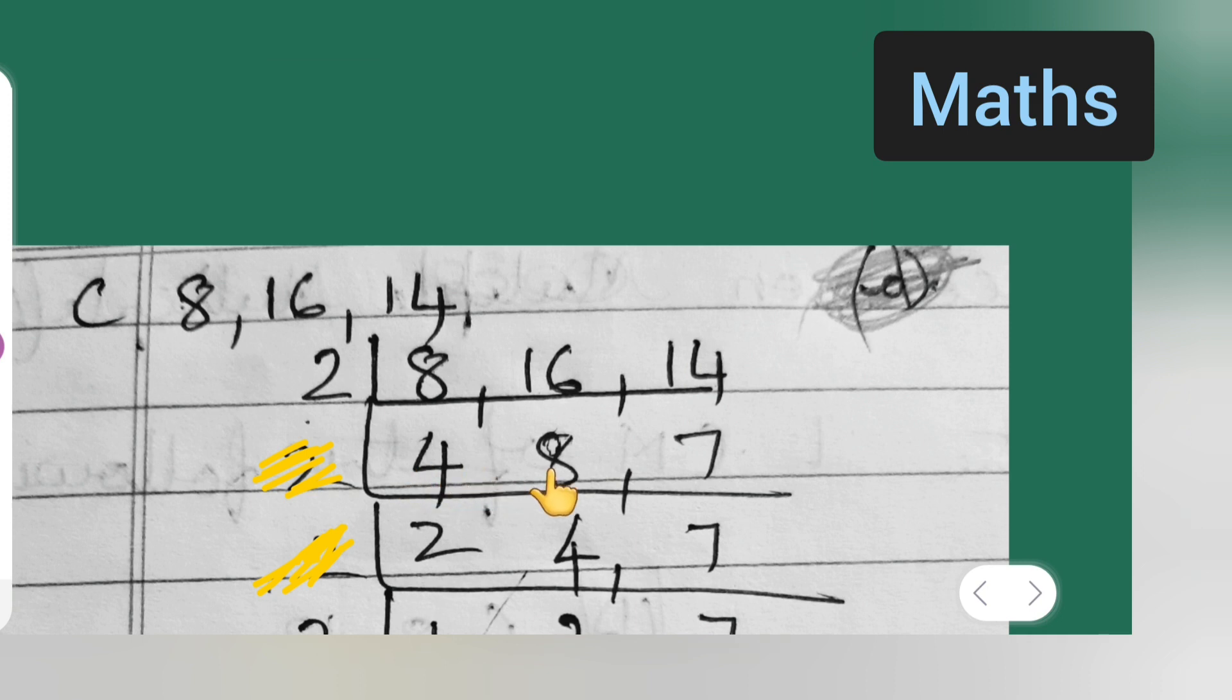Now we are getting this 4 and 8 in the table of 2, but we are not getting 7, so what we do is we keep this 7 as it is over here. Let us see: 2 twos are 4, 2 fours are 8. 7 we are not getting in the table of 2, so we are keeping it as it is.